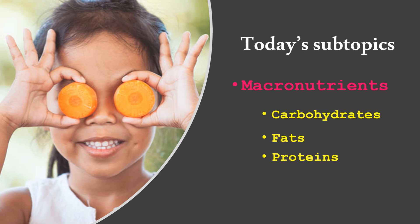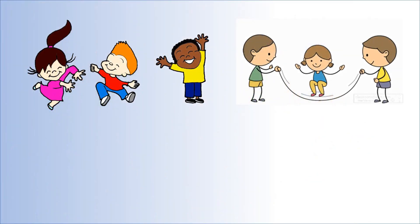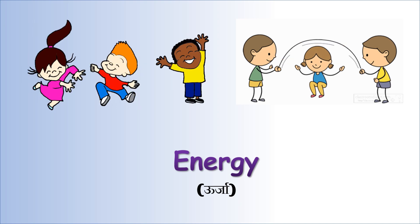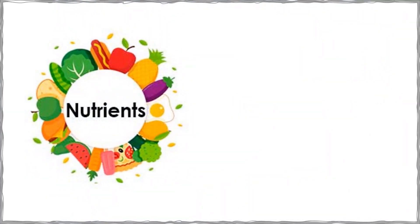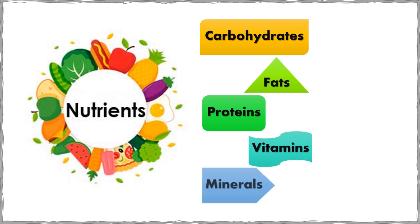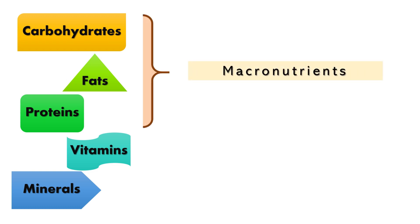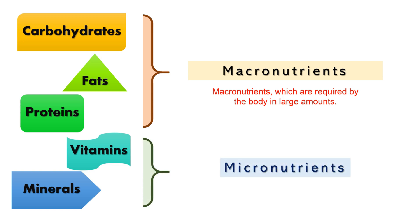We all have learned that food stuffs have constituents that are useful to us in different ways. We get energy from these food stuffs because they contain constituents, and these constituents are what we call nutrients. Nutrients are carbohydrates, fats, proteins, vitamins and minerals. Carbohydrates, fats and proteins are called macronutrients, which are required by the body in large amounts. Vitamins and minerals are included in micronutrients, which are required by the body in small amounts. Today we will learn about macronutrients.